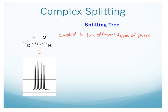One way to rationalize these signals is by thinking about how it splits and drawing a splitting tree. What we see is that this proton — the one we're looking at in red — is coupled to two very different types of protons. On the first carbon, this is an alkene proton. And then on the second carbon, we have an aldehyde proton. So rather than following the typical N plus 1 splitting, it follows a more complex pattern. Let's label these as A and B — it follows (N_A + 1) times (N_B + 1).